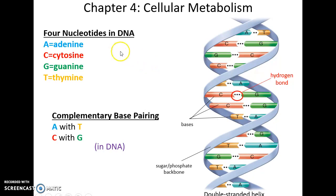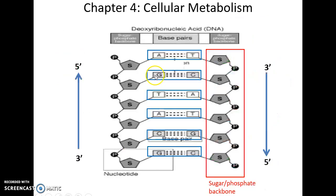In DNA there are four different nitrogenous bases: adenine, guanine, cytosine, and thymine. With complementary base pairing, A always binds with T, and C always binds with G — so if you have C on one side, you must have G on the other. The two strands are oriented in opposite directions (antiparallel), which is important to allow proper hydrogen bonding between the nitrogenous bases.